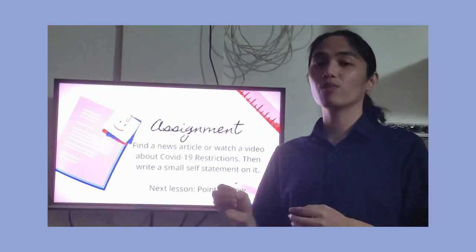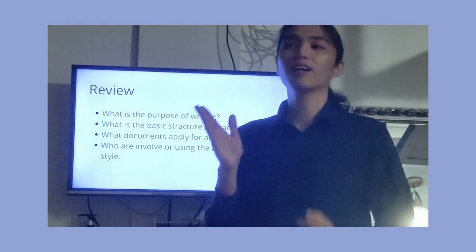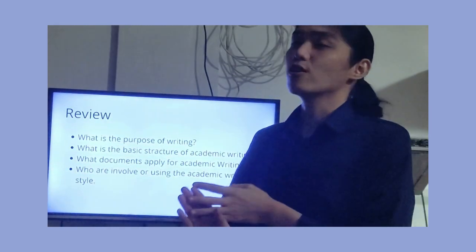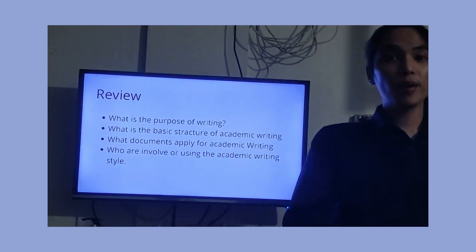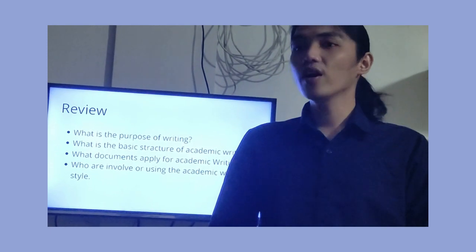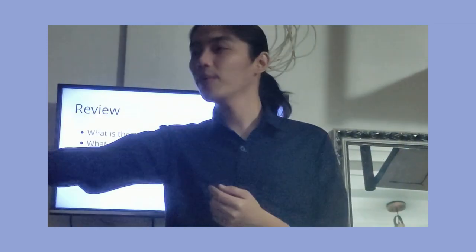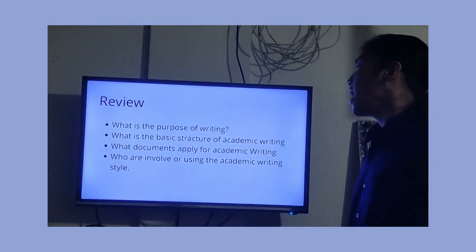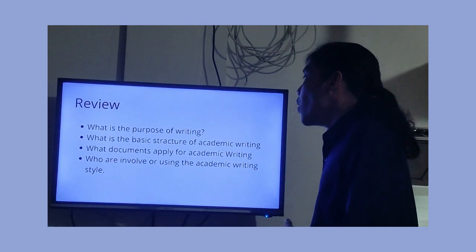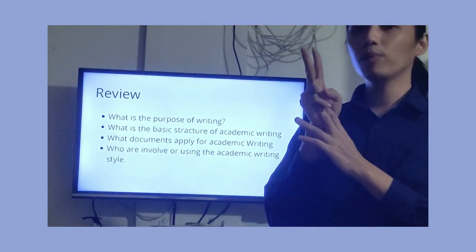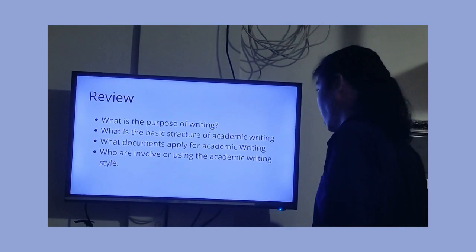Let's review what you've learned. What is the purpose of writing? We have four types: to entertain, to inform, to explain, and to persuade. What is the basic structure of academic writing? IBC — I stands for Introduction, B stands for Body, C stands for Conclusion. What documents apply for academic writing? Examples include research paper and essay. Who uses academic writing? Students and professional individuals.